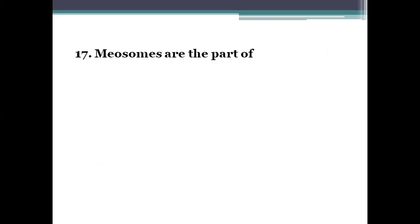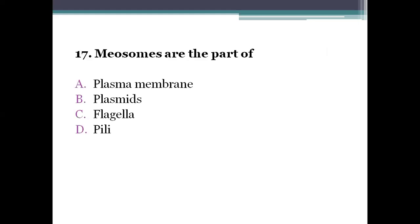Next question: mesosomes are the part of option A, plasma membrane. Option B, plasmids. Option C, flagella. Option D, pili. The right answer is option A, plasma membrane. Mesosomes are formed by the invaginations of the plasma membrane. Plasmids are extra-chromosomal genetic elements consisting of DNA. Flagella are organs of locomotion, and pili are organs of adhesion helpful for attachment.